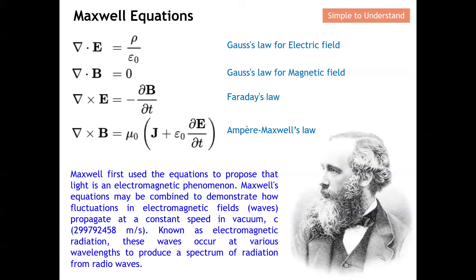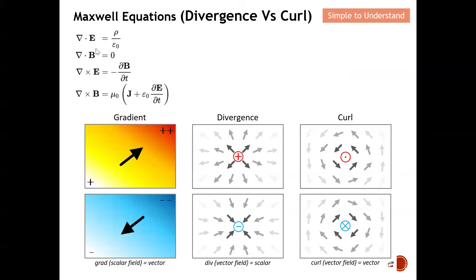Before going into the four equations, let me quickly explain the concept of divergence. Divergence means that everything radiates outward — for example, how does an electric field diverge out from a point? Conversely, there is also the case where the field converges into a point. The first two Maxwell equations are formulated under this concept of divergence.